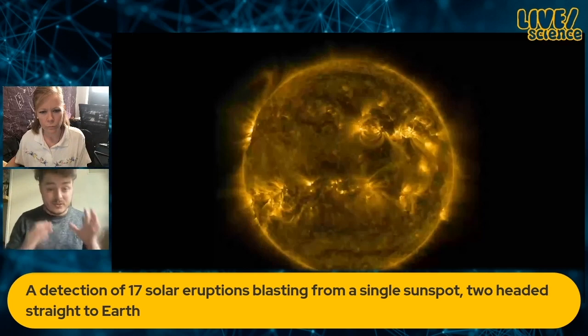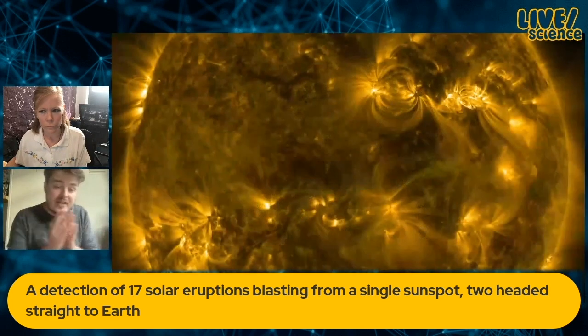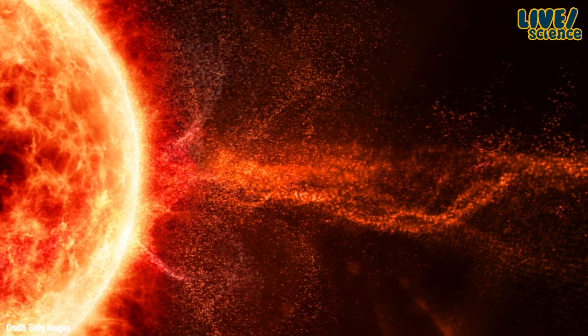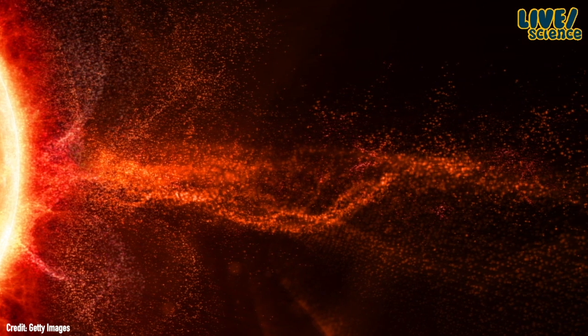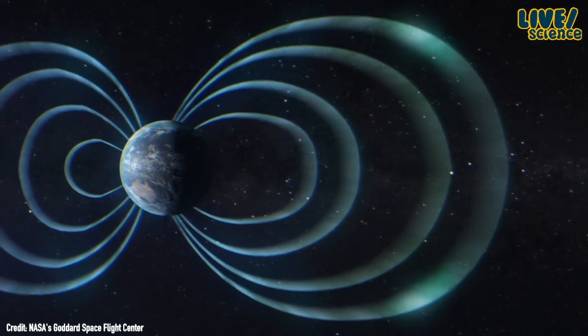A cannibal coronal mass ejection is caused by sunspots. There's a sunspot on the sun called AR2975 right now, and over the last few days it's been producing up to 17 solar eruptions. Two of them were headed straight towards us. The second one was traveling faster than the first, and when it caught up, it cannibalized it — sweeping it all up into one big wave of charged particles that swept toward Earth and caused a geomagnetic storm.